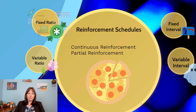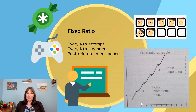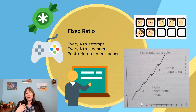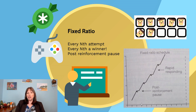A fixed ratio partial reinforcement schedule is the idea that rather than getting reinforced every time you do a behavior, you only get reinforced every second, fifth, tenth, or hundredth time you do that behavior. For example, if you're emailing your professor and they only email you back every third time you send an email — if this was reliable, you would quickly learn to send three duplicate emails back to back if you wanted a response.